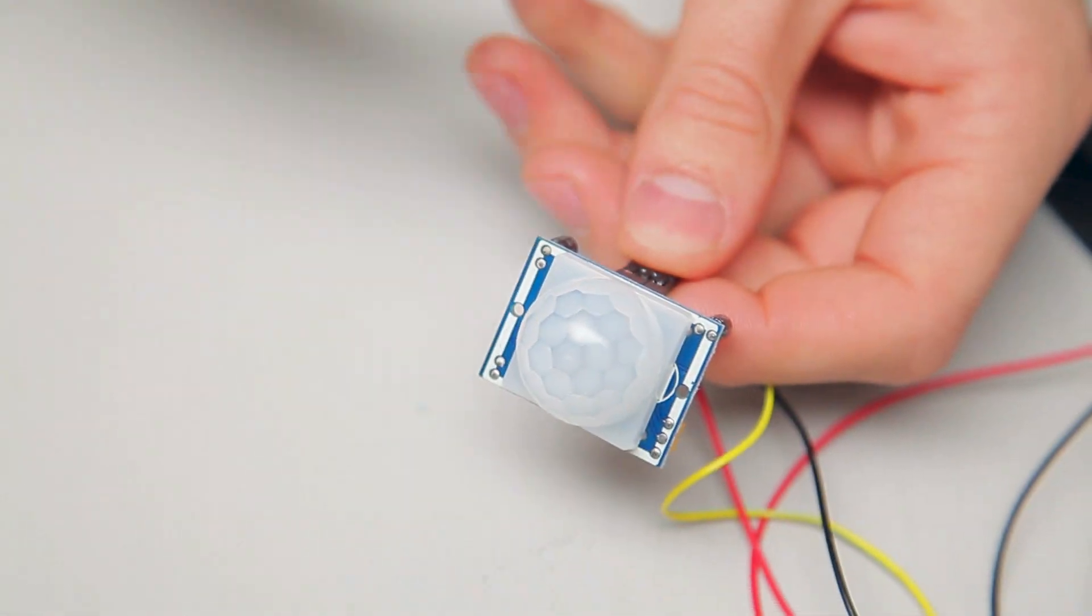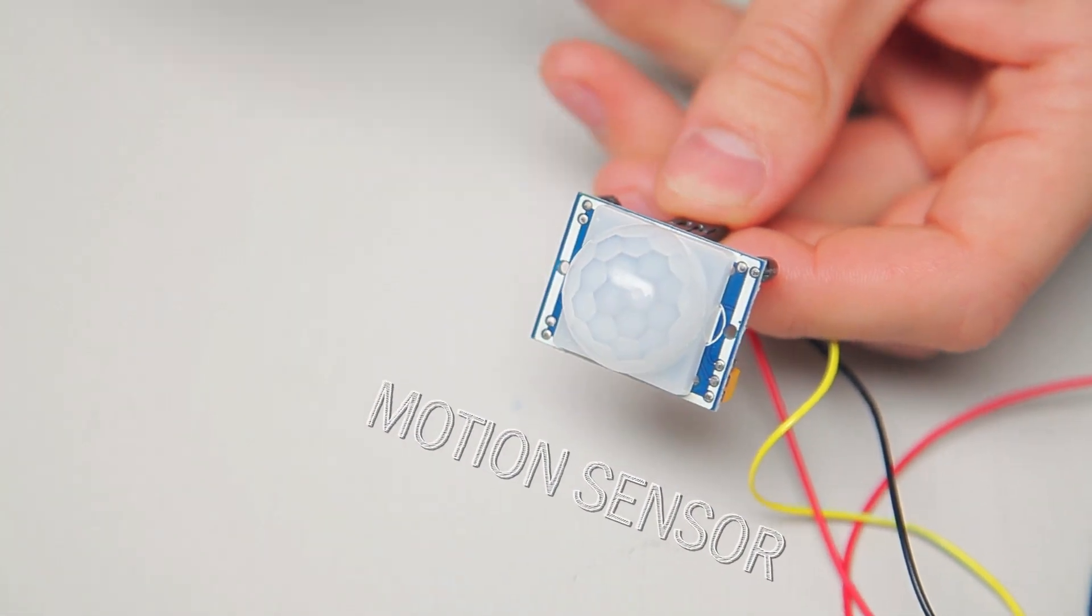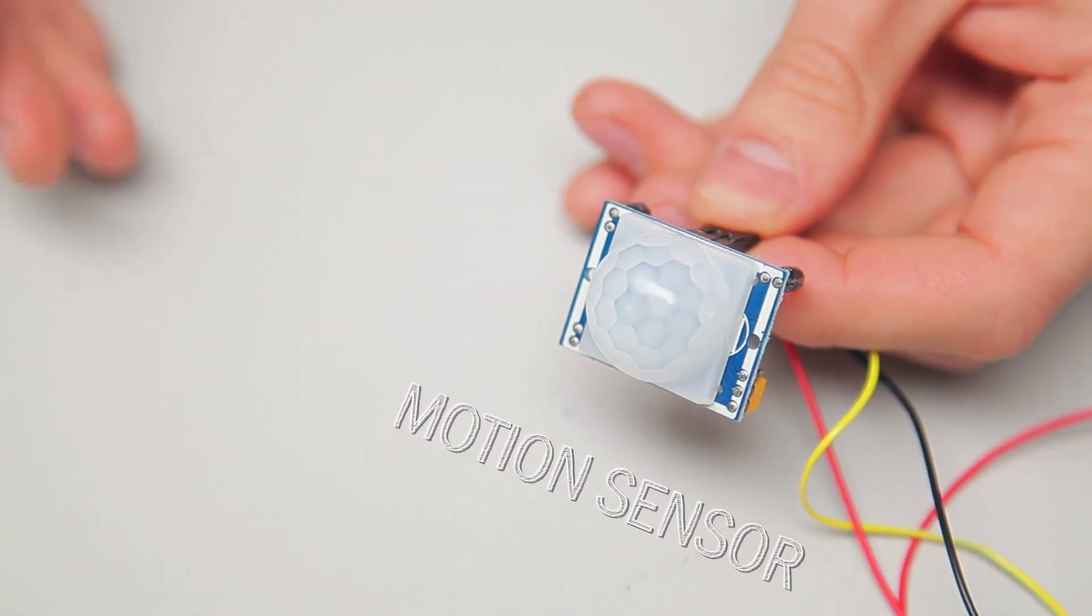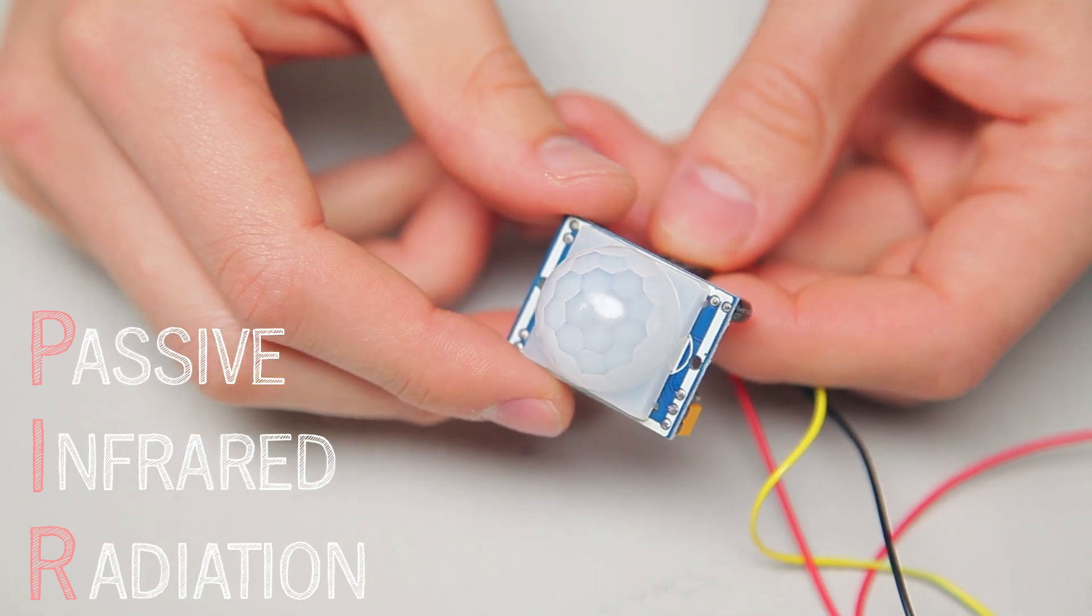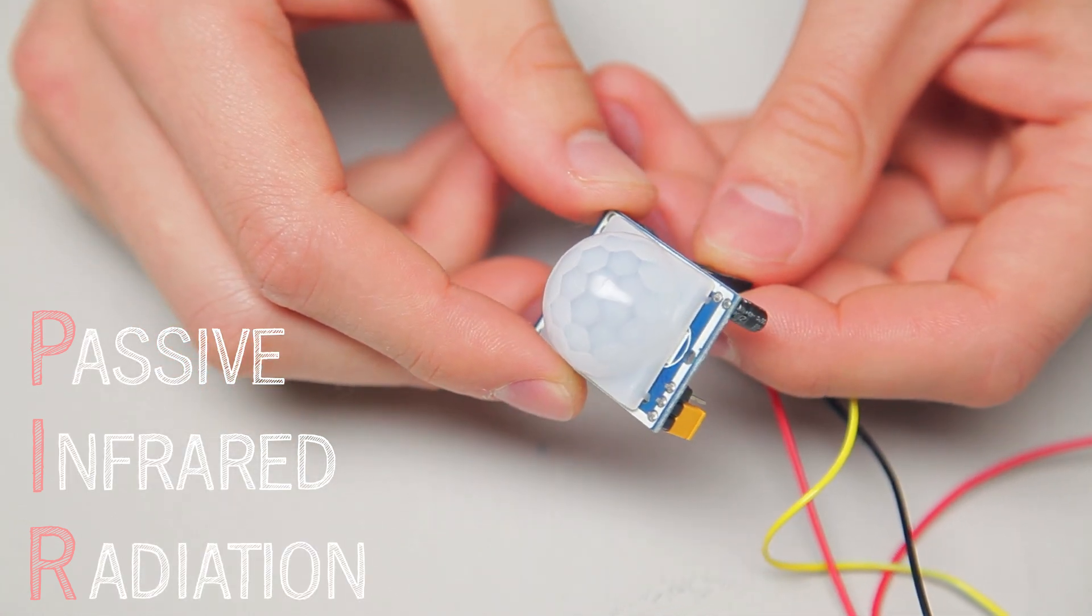So this component is your actual motion sensor. There are a lot of different kinds of motion sensors out there, but yours is what's known as a PIR or passive infrared sensor.